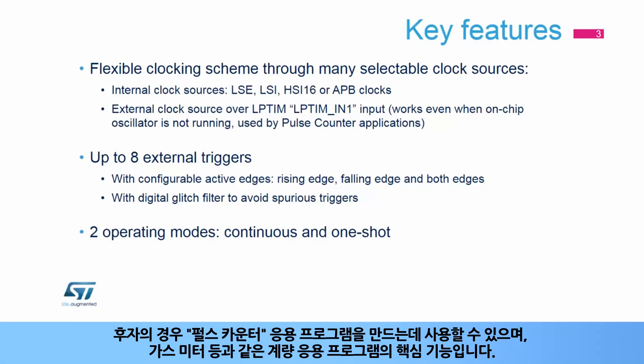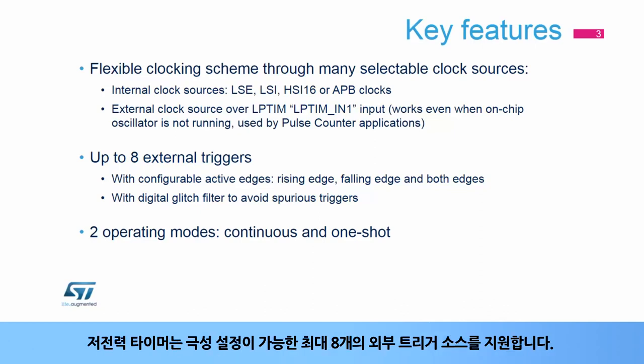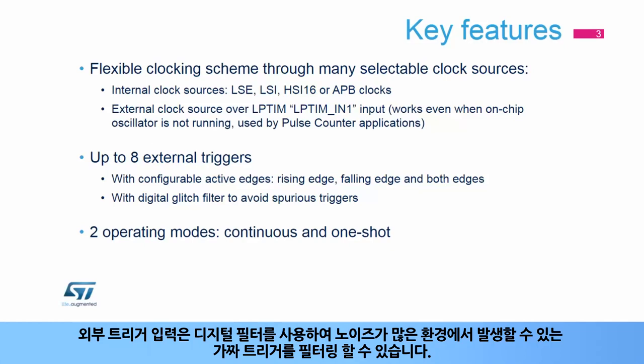The external clock source feature is used for building pulse counter applications and is a key function for metering applications like gas meters. The low power timer features up to 8 external trigger sources with configurable polarity. External trigger inputs feature digital filters to cancel out faulty triggers that could be raised in noisy operating environments.